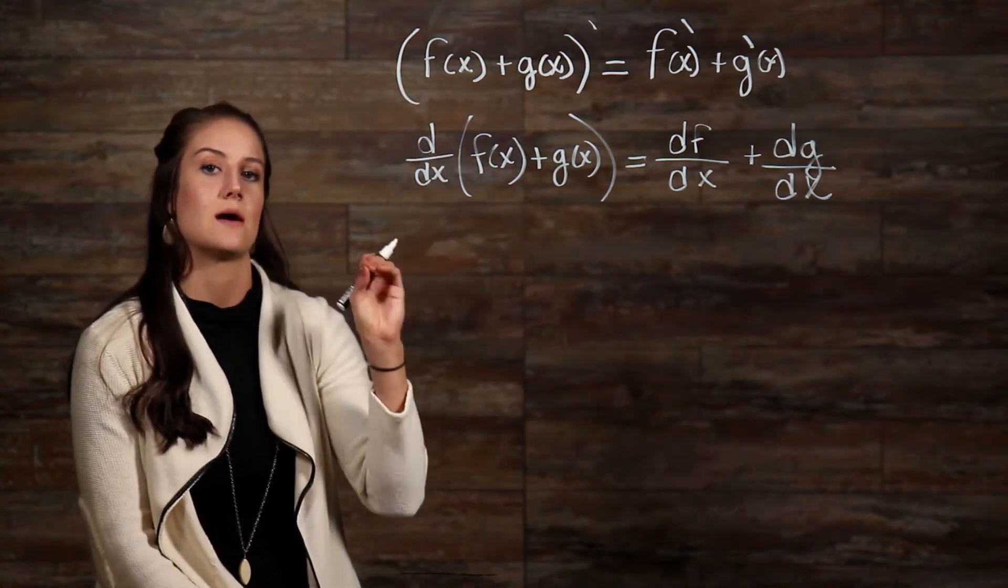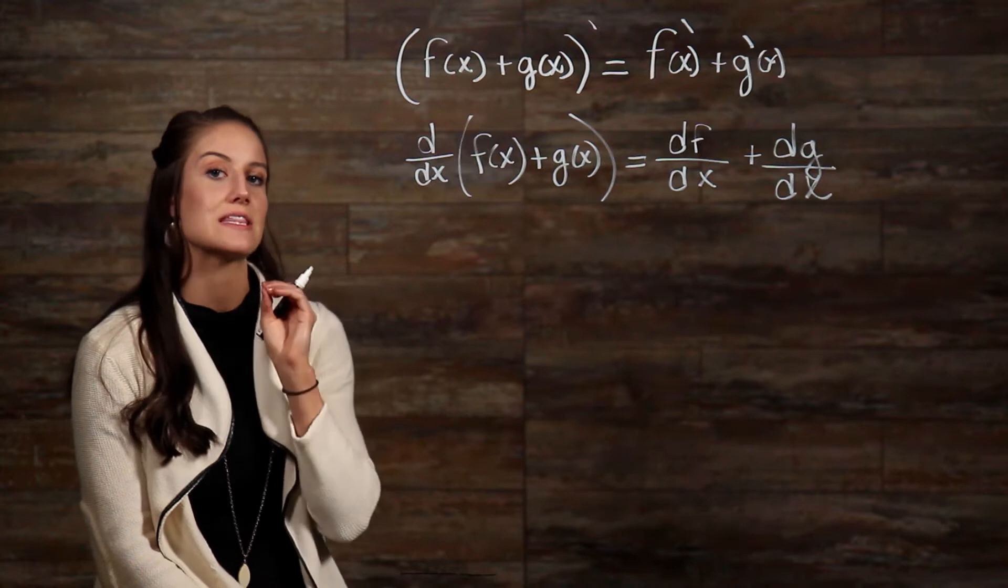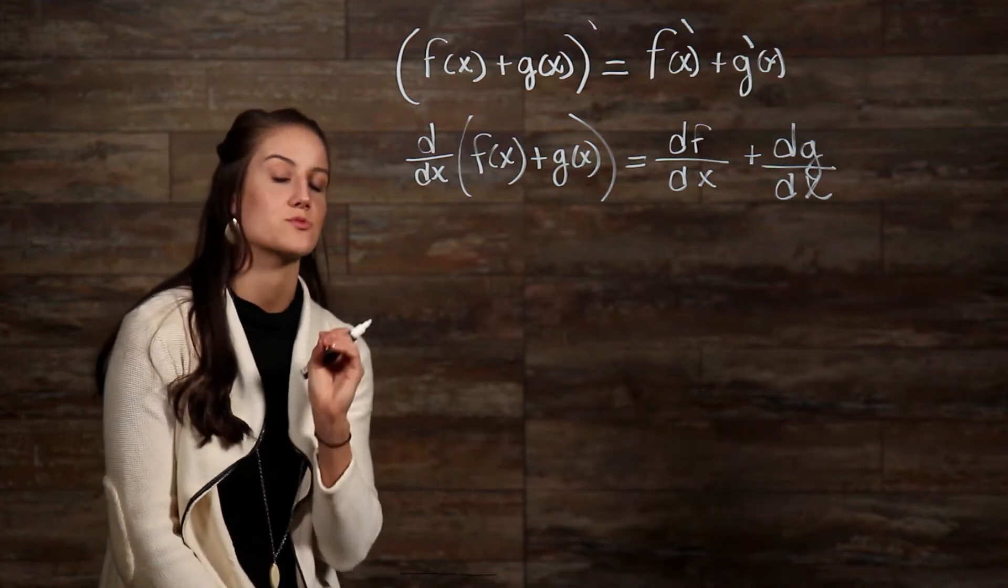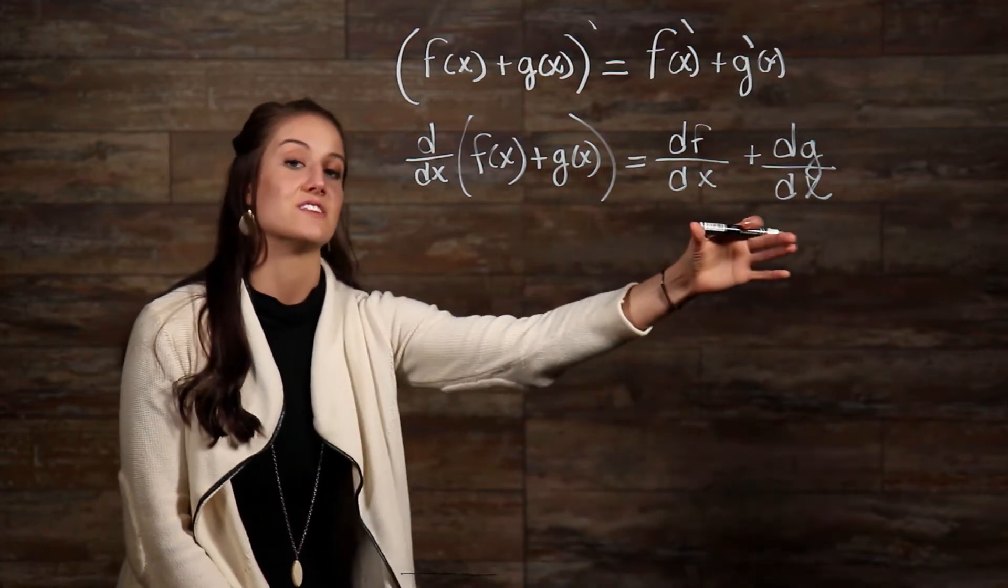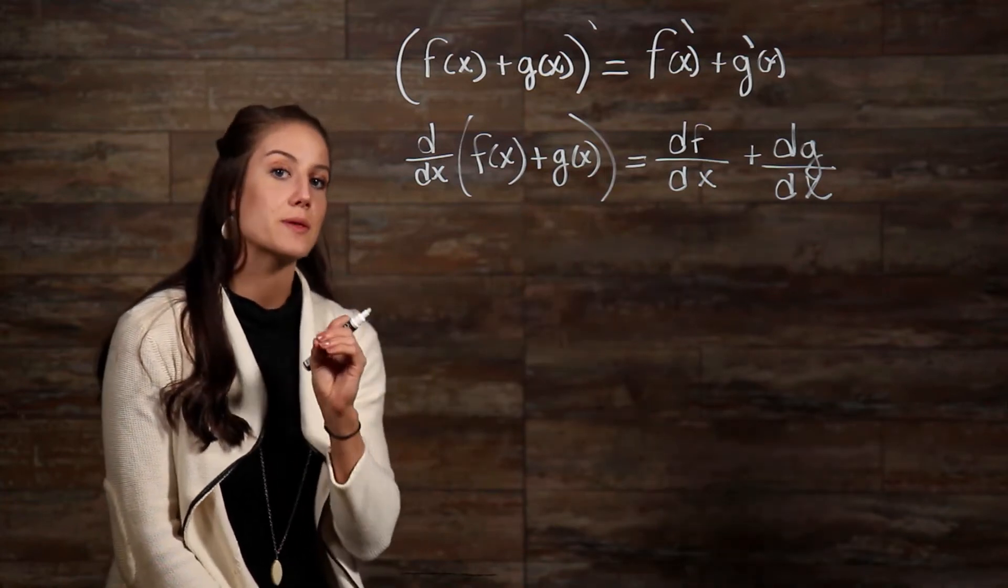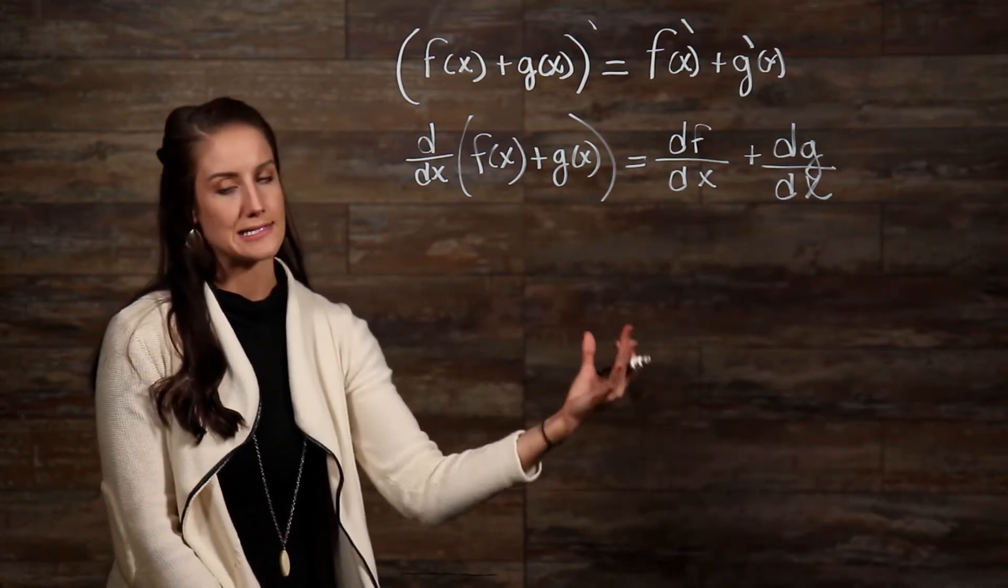What this property is telling us is that when differentiating a function that has two terms being added or subtracted, you can take the derivative of the terms individually, and simply put them back together with the correct sign.